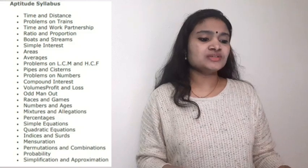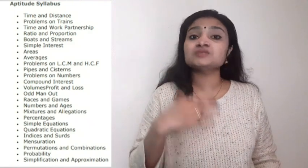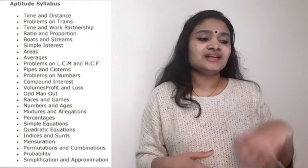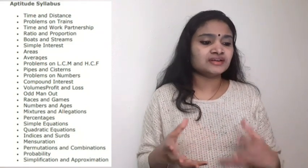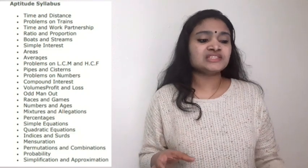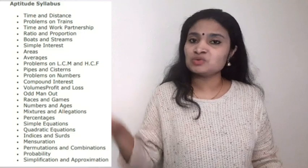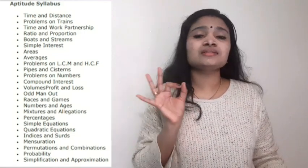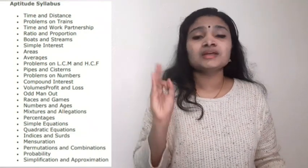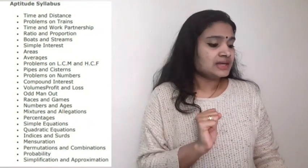From the aptitude section, important areas include: time and distance, problems on trains, time and work, partnership, ratio and proportion, boats and streams, simple interest, compound interest, averages, LCM and HCF, volume, profit and loss, odd man out, mixtures and allegations, symbol equations, quadratic equations, permutation and combination, probability, simplification, and approximation. These three sections — reasoning, general awareness, and aptitude — together comprise 50 marks.